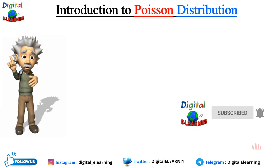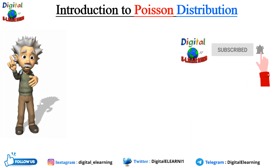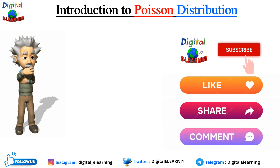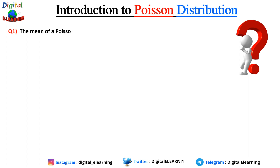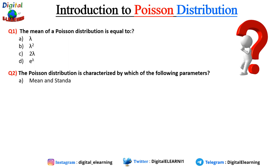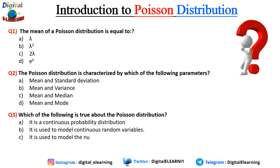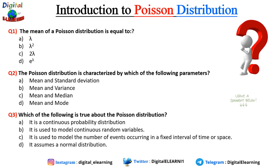If you are still watching this video, don't forget to hit the subscribe button and press the bell icon for all notifications. If you liked this video, hit the like button and share with your friends and colleagues. Now it's quiz time: Question 1 — the mean of Poisson distribution is equal to: lambda, lambda squared, 2 lambda, or e^lambda? Question 2 — Poisson distribution is characterized by which parameters: mean and standard deviation, mean and variance, mean and median, or mean and mode? Question 3 — which is true about Poisson distribution: it is continuous, it models continuous variables, it models the number of events in a fixed interval, or it assumes a normal distribution? Leave your answers in the comments below.